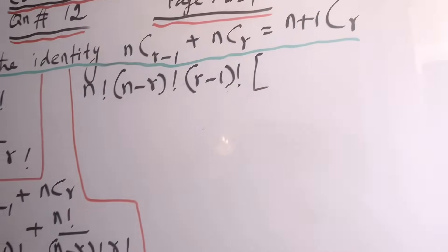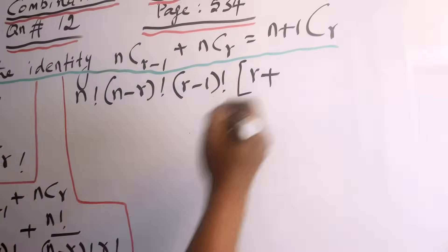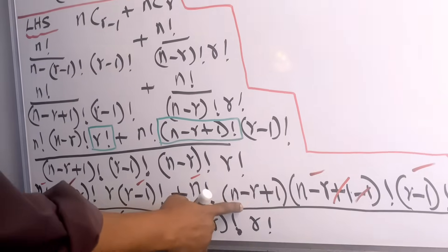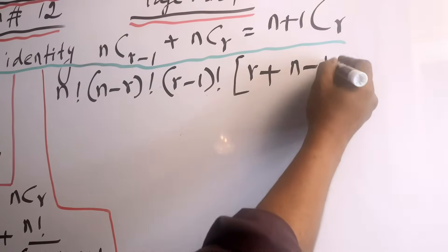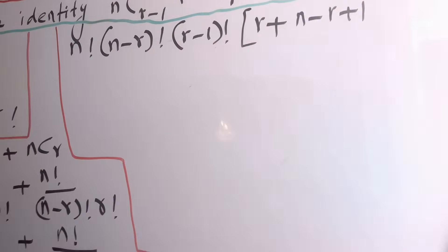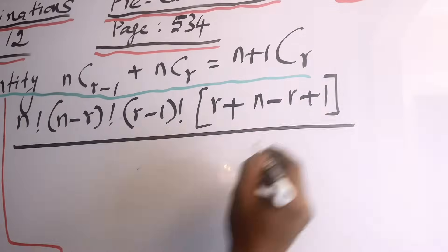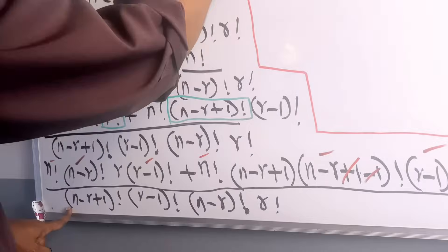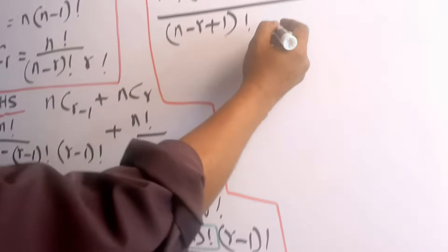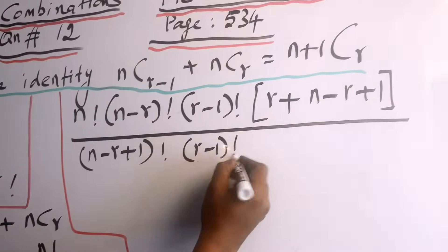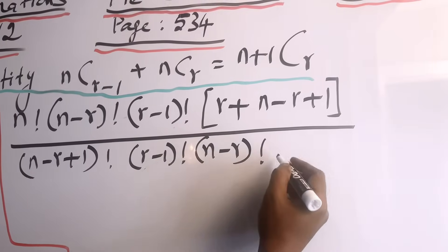So what remains inside the brackets is r plus (n-r+1). The denominator contains all terms that were not factored out: (n-r+1) factorial, (r-1) factorial, (n-r) factorial, and r factorial.